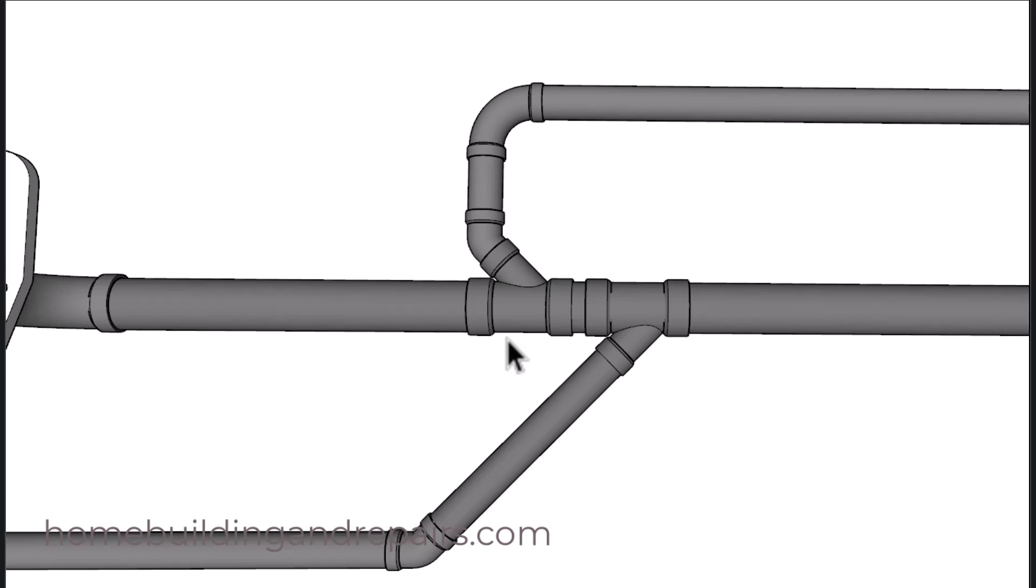However, if your building code requires the toilet to be the furthest fixture downstream in the wet vent system, this could be a problem. Taking us back to using the original double Y connection.